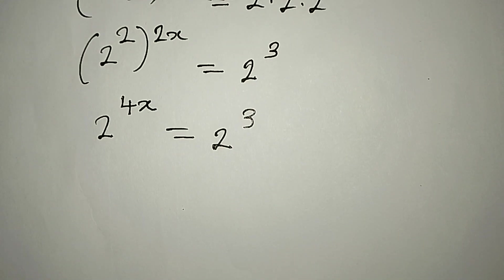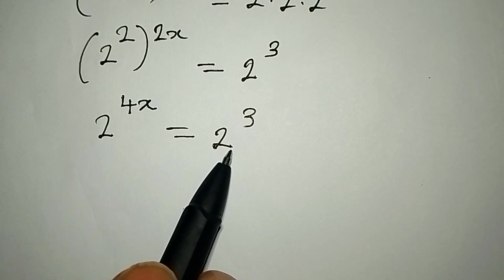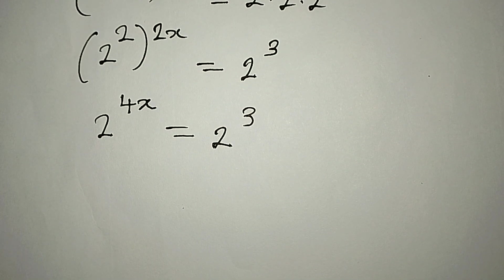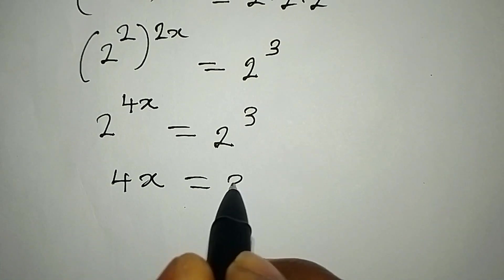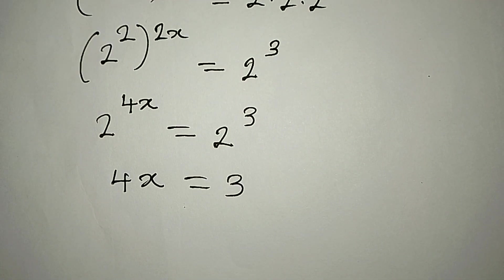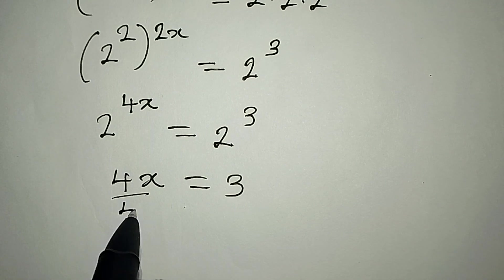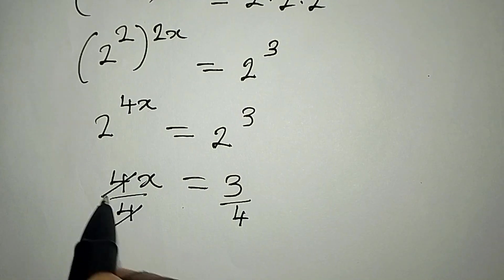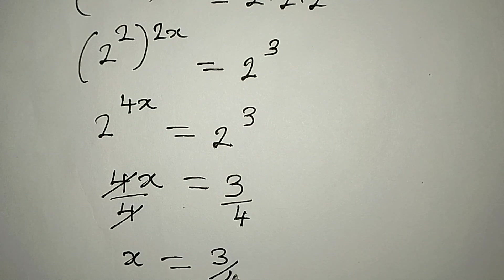Remember that our target was to make sure we have the same base. Now that the bases are the same, we work with the powers. So 4x is now equal to 3. To get the value of x, we divide both sides by the coefficient — divide by 4 on both sides — and then x is equal to 3 over 4.